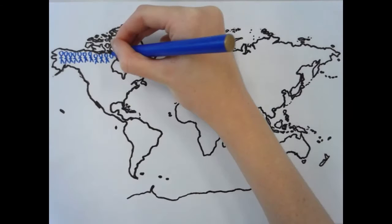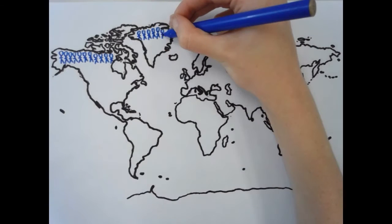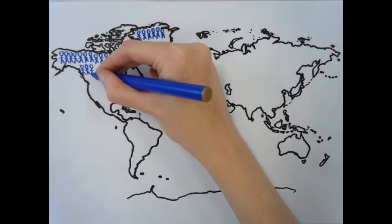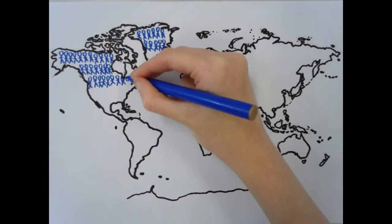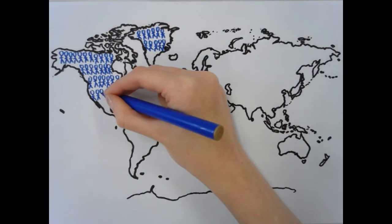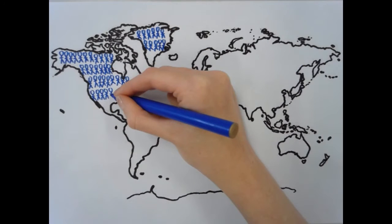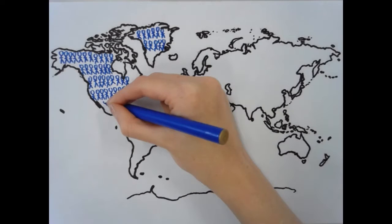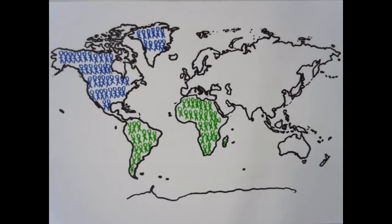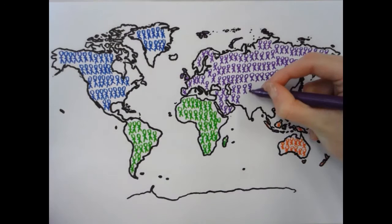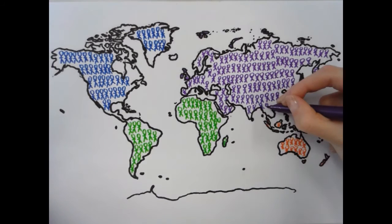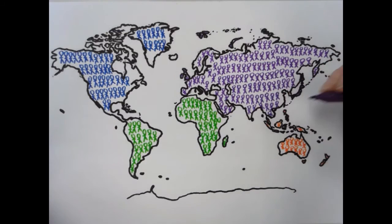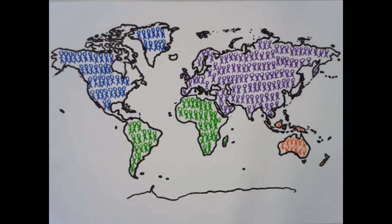Overpopulation is defined as the condition of having a population so dense as to cause environmental deterioration, impaired quality of life, or a population crash. A significant rise in global population is credited to a number of factors including reduced mortality rate, better medical facilities, better standards of living, higher birth rates, and increasing technological advances.